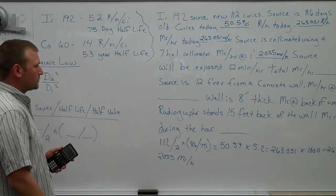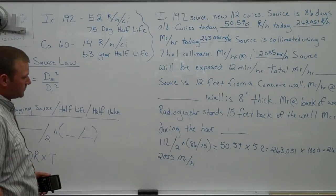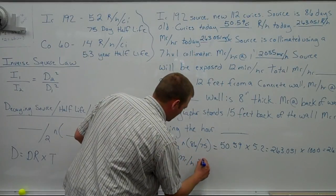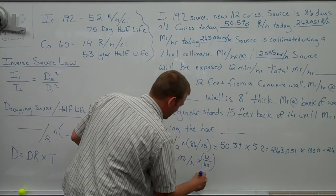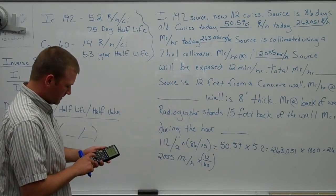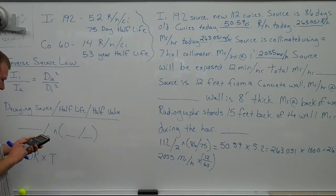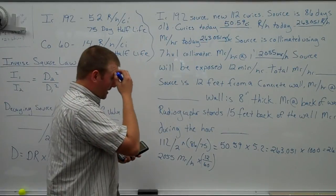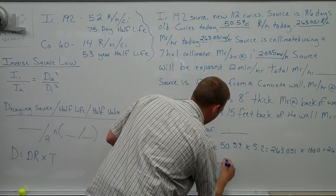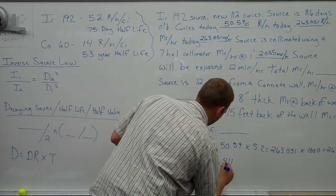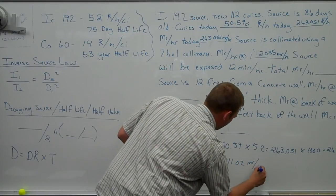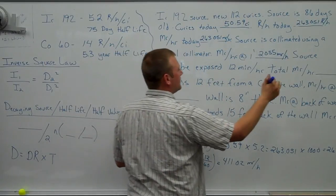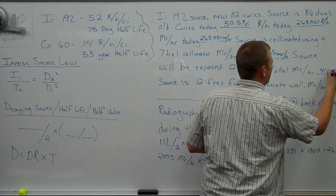So now the source is going to be exposed 12 minutes per hour. Dose over here. I'm going to multiply that by 12 over 60. That brings it down to 411.02 milliRankins per hour. Right there, 12 minutes per hour. 411.02.